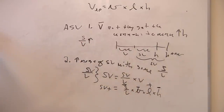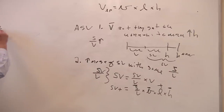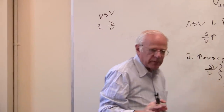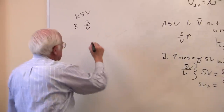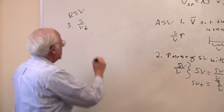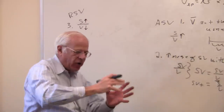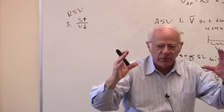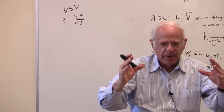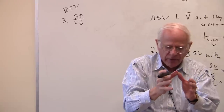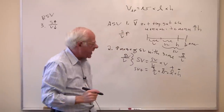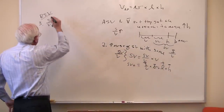The third example is called relative surplus value. Marx spends a lot of time on this one, and we will too. Relative surplus value is an example in which the value of labor power falls and the surplus rises. Remember: the workers are producing a value added, and they only get a share of that value. So if you squeeze the value — reduce it — the total surplus rises. Marx calls that relative surplus value.